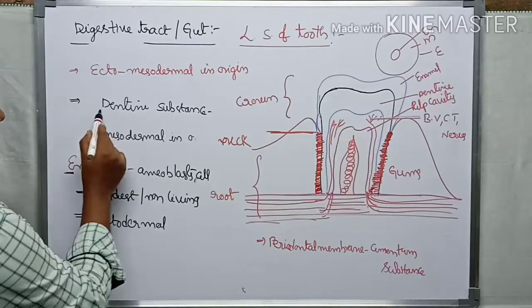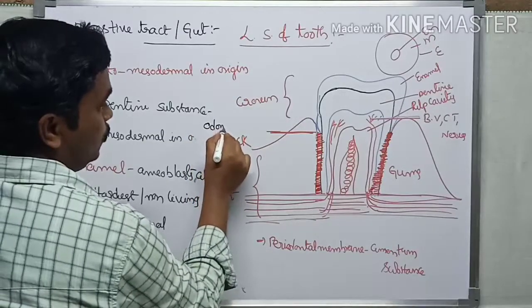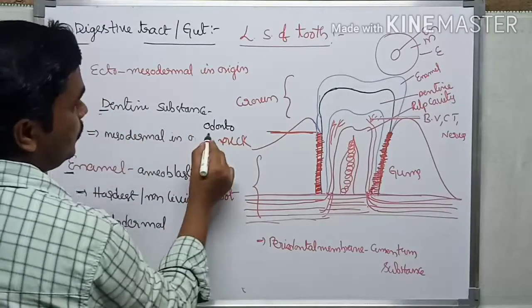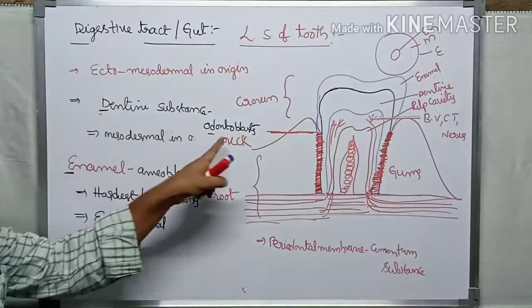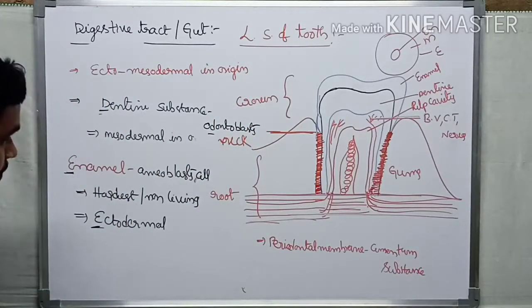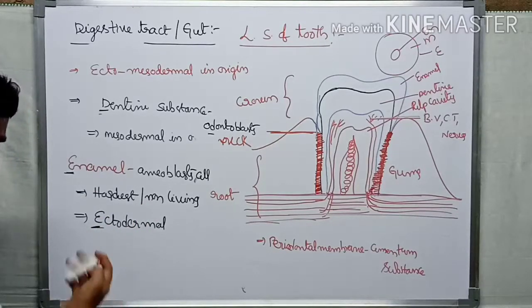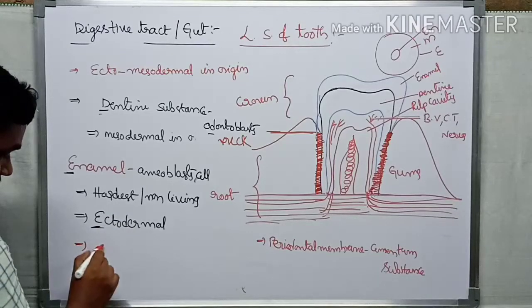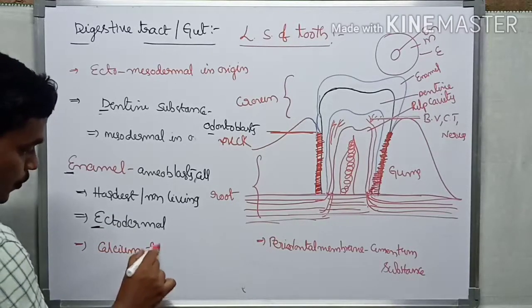Dentin is the substance secreted by odontoblasts cells. So dentin substance and enamel substance - the hardest, shiny material. It is formed by calcium fluoride.